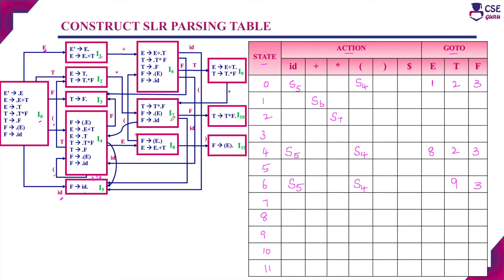State I7 transitions: with non-terminal F goes to I10 — enter 10 in go-to. For terminals: with open bracket goes to I4, enter S4; with ID goes to I5, enter S5. I7 state is now complete.